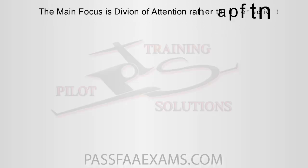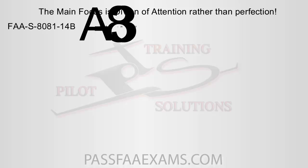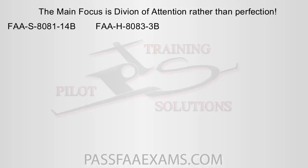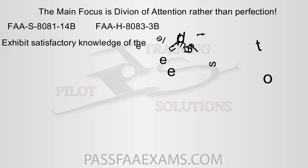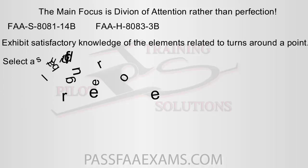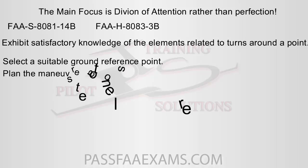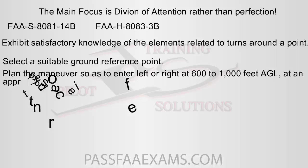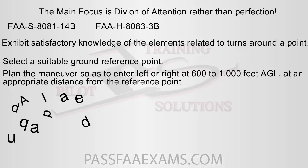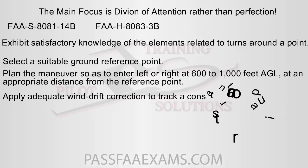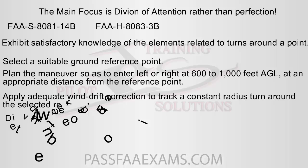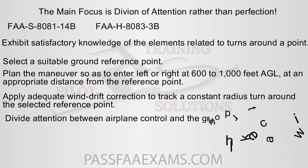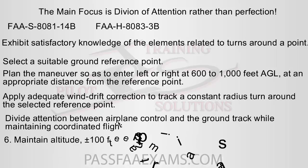As explained in the rectangular course video, the division of attention should be your key focus and what the examiner will be looking for, rather than perfection. The maneuver should be performed within the guidelines of the Practical Test Standards and the Airplane Flying Handbook, and you can find links to both in the description. The PTS states: maintain altitude plus or minus 100 feet, maintain airspeed plus or minus 10 knots.